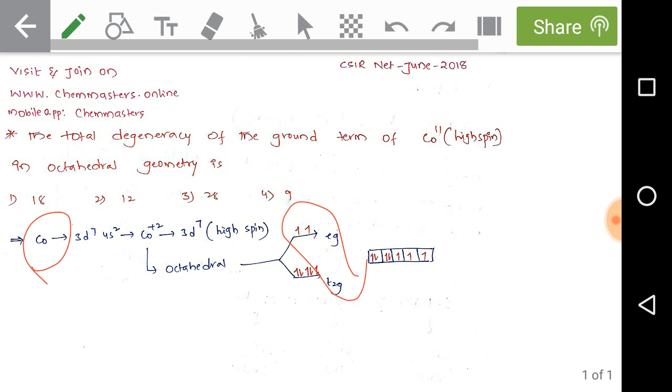From this we can get that the cobalt(II) octahedral high spin complex is having three unpaired electrons. If we consider the d orbital of cobalt(II), after arranging the electrons, just start from here: zero, and from right side minus one and minus two, and left side plus one and plus two.